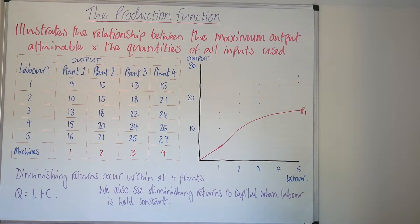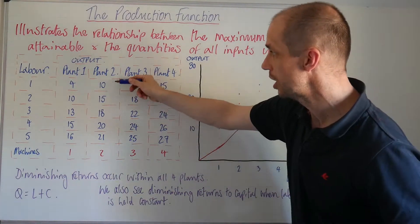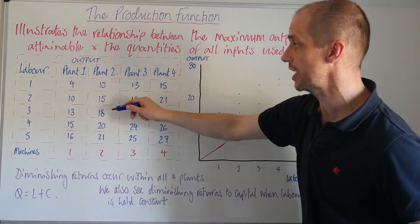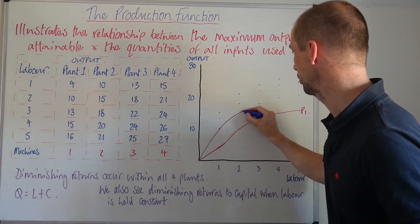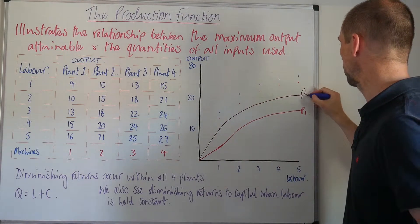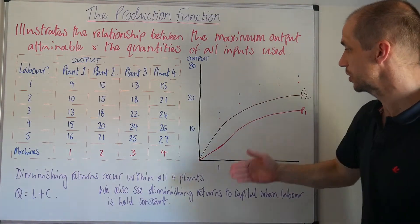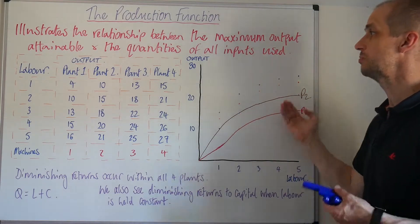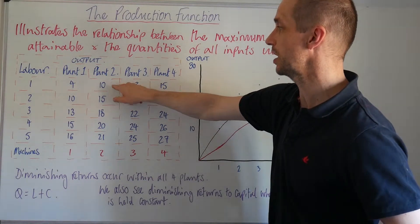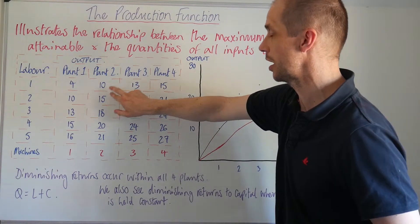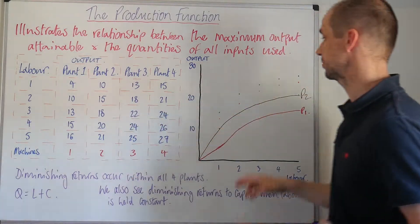So if we now move, let's have a look at plant number two. So we're going from ten to fifteen to eighteen to twenty to twenty-one, let's put that one through. And we can therefore see with plant two once again we see initially those increasing returns to scale and then the diminishing returns really setting in. So we see a big increase once the first labor is actually recruited, but here we see a marginal product of five and then it's down to three.